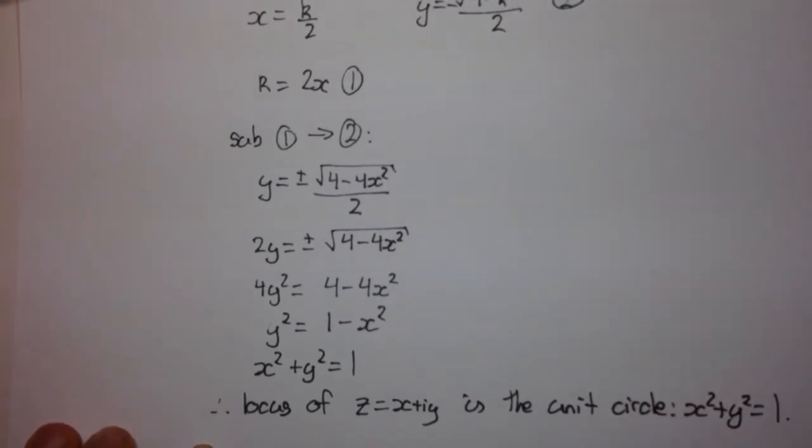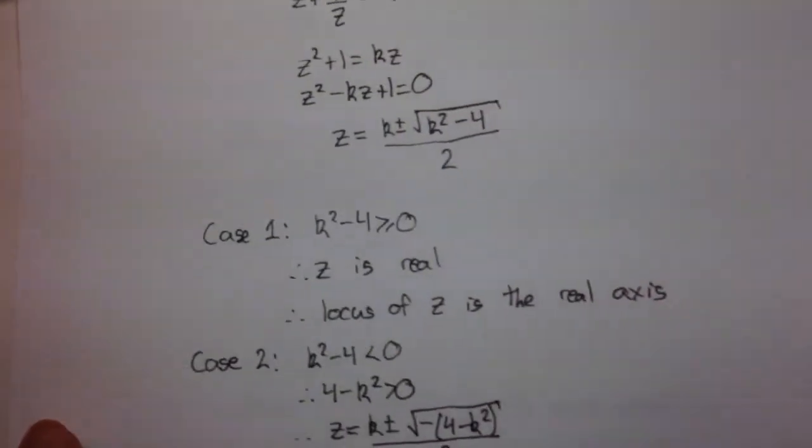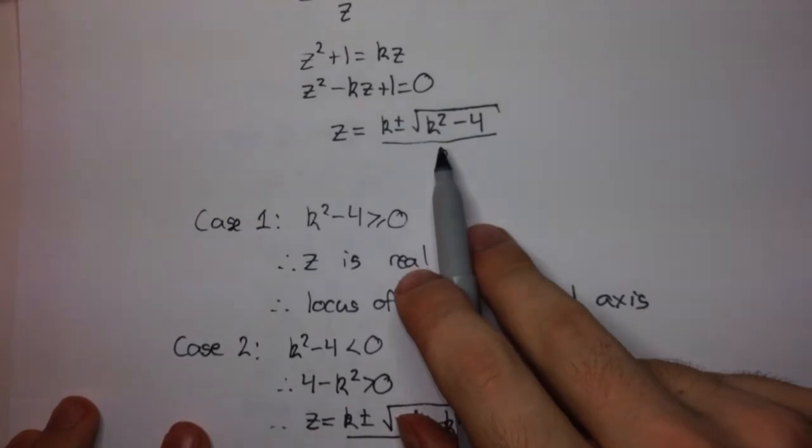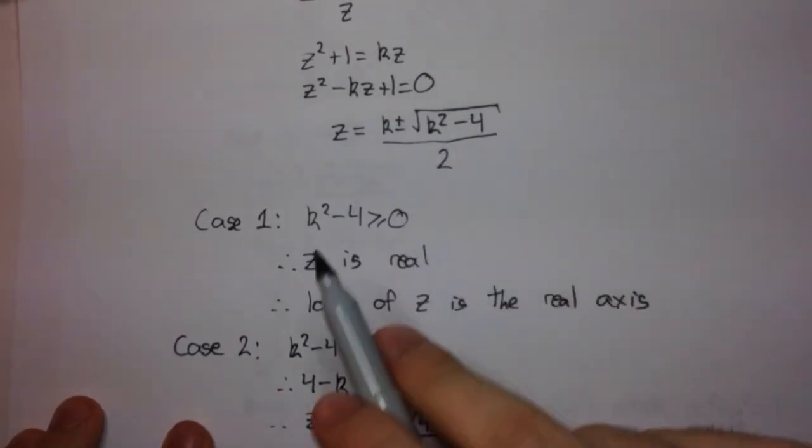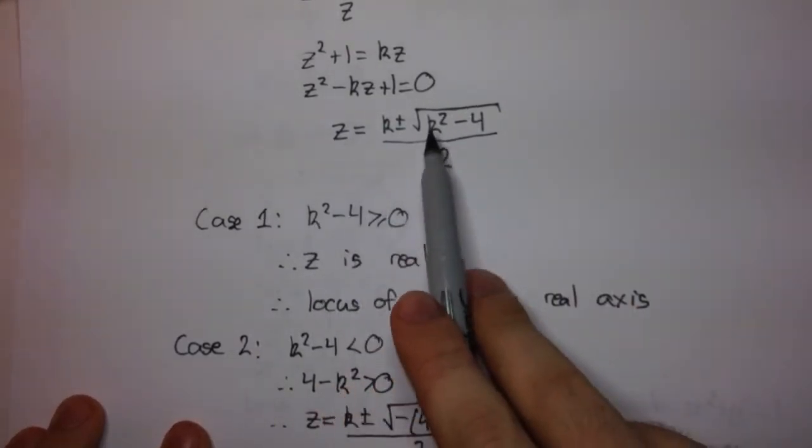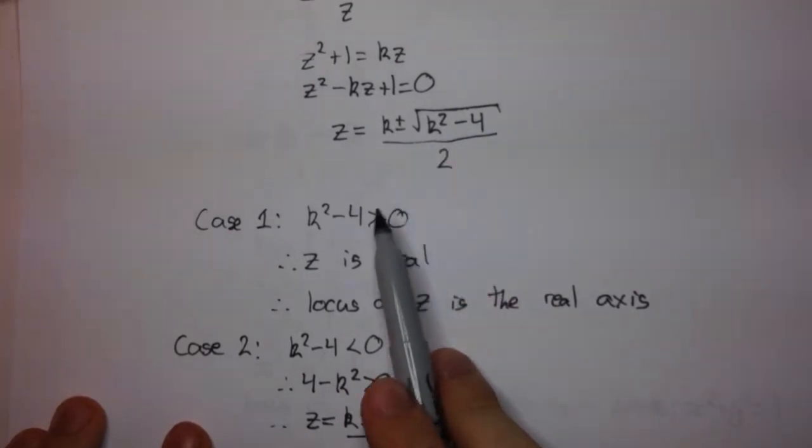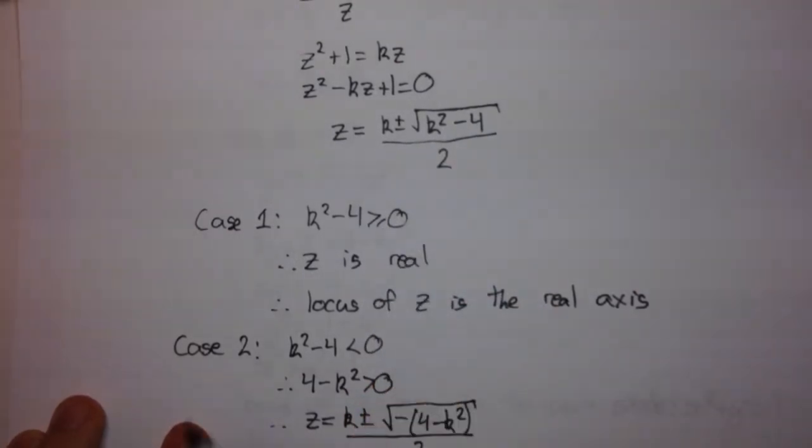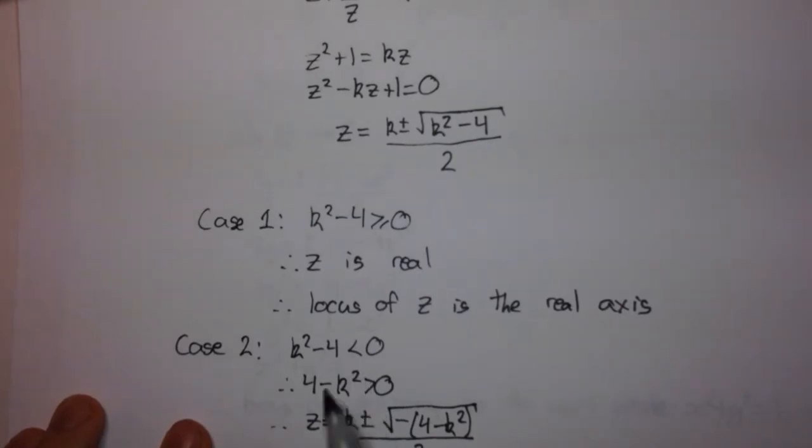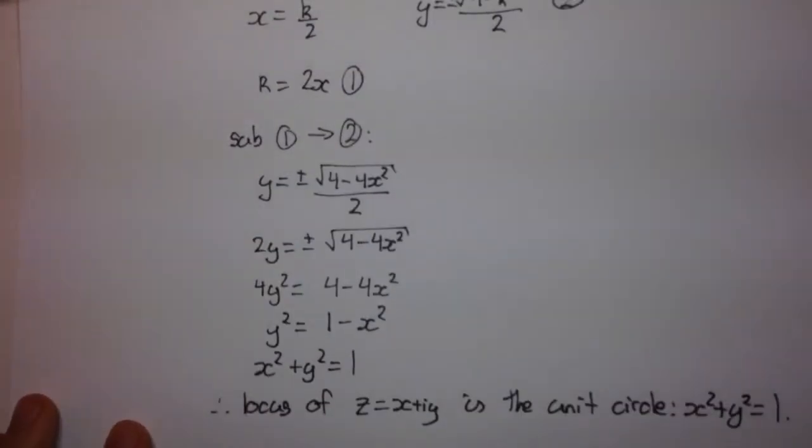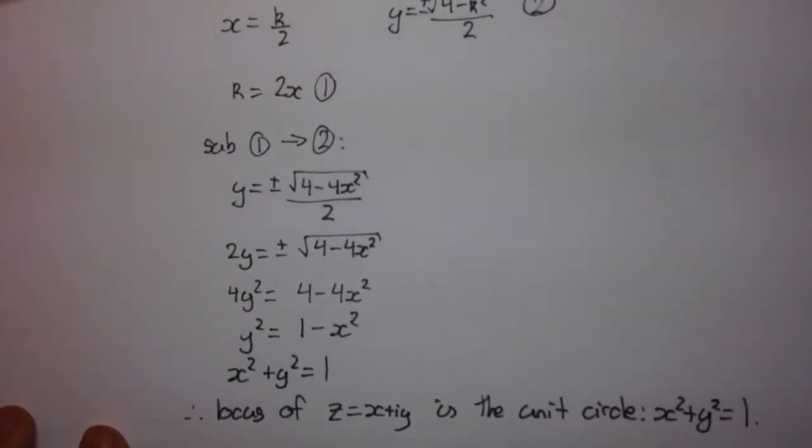So, the main trick here was to identify that when we got to this stage, we had to consider the two different cases. Namely, when k squared minus 4, which was the expression under the radical, was greater than or equal to 0, and when it was less than 0. And then we had to work out the two loci from there.